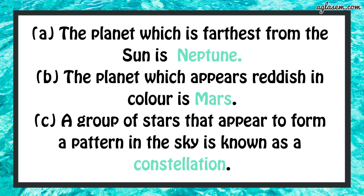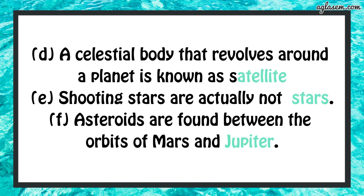Moving to question number 4: fill in the blanks. The planet farthest from the sun is Neptune. The planet which appears reddish in color is Mars. A group of stars that appear to form a pattern in the sky is known as a constellation. A celestial body that revolves around a planet is called a satellite. Shooting stars are actually not stars. Asteroids are found between the orbits of Mars and Jupiter.